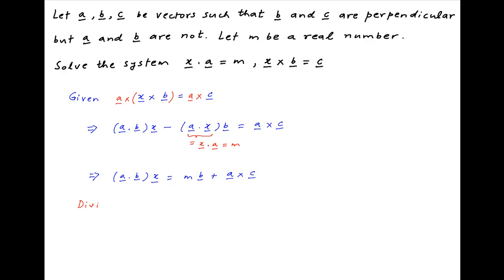Now we are given that vectors A and B are not perpendicular. Therefore A dot B is not equal to 0.